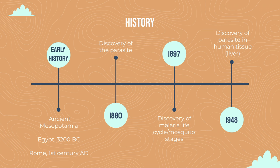Malaria has afflicted humans for thousands of years. Clay tablets with cuneiform script from Mesopotamia mention deadly periodic fevers suggestive of malaria. Malaria was also found in Egyptian remains dating back to 3200 BC. And in the first century AD, malaria's arrival in Rome was a turning point in European history. For the next 2,000 years, whenever crowded settlements and standing water were harbored, malaria flourished.